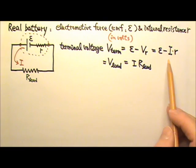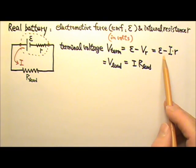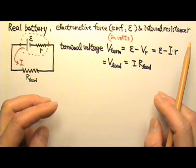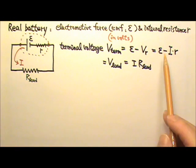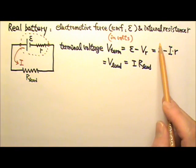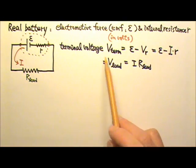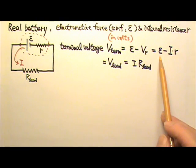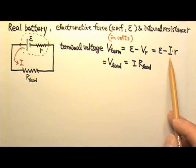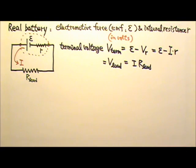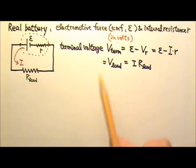This tells us that although the battery is supposed to provide a voltage equal to its EMF, the real terminal voltage is less than EMF unless the current is zero. And the more current the battery provides, the lower the terminal voltage.